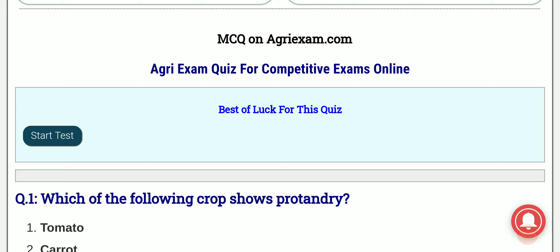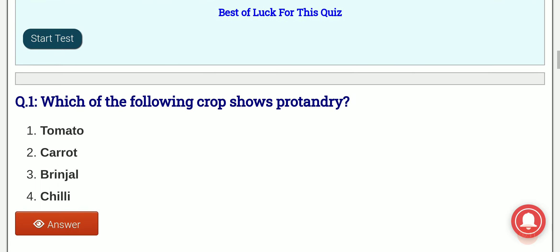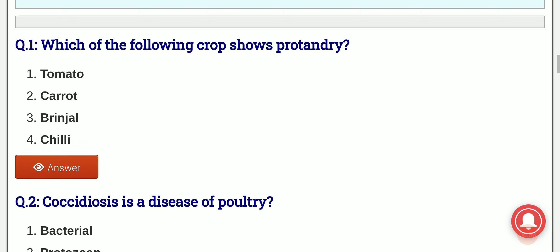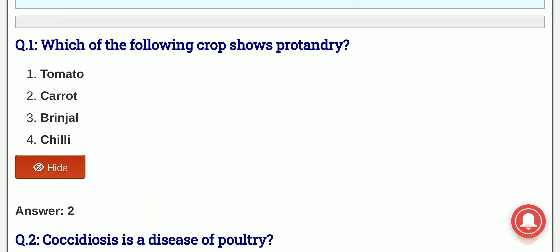The first question is which of the following crop shows protandry? The options are tomato, carrot, brinjal, chili. And the answer is option 2, that is carrot shows protandry.